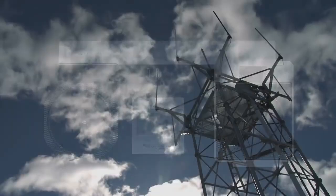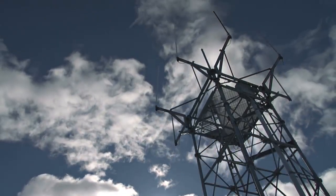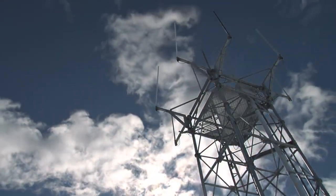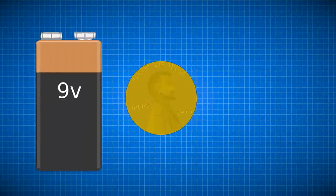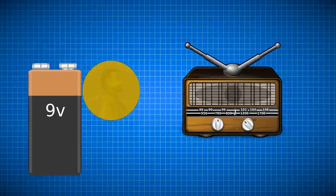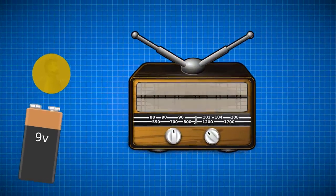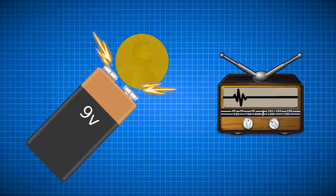As a demonstrable introduction to understanding what radio is, we'll engage in a simple explanation of how you might make one. All you need is a battery, a coin, and an AM radio. Tune the radio to a static channel and start tapping that coin on the two terminals of the battery.